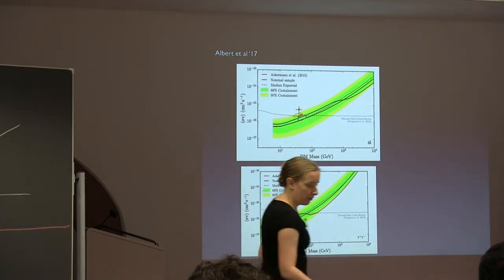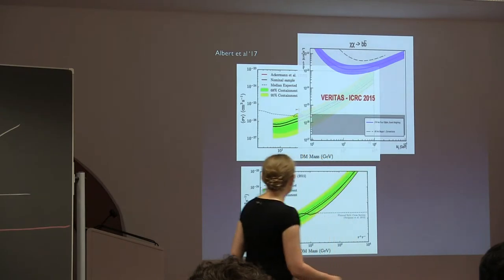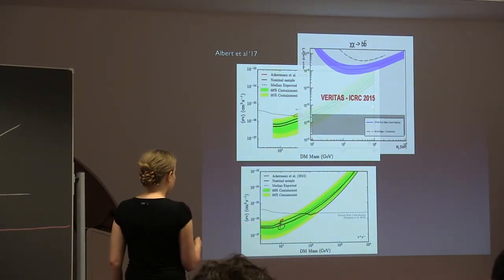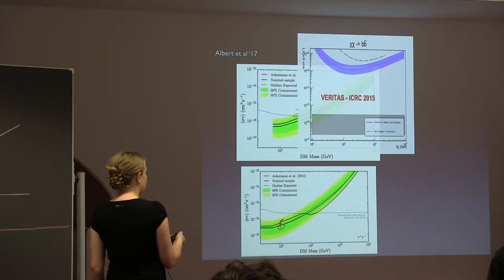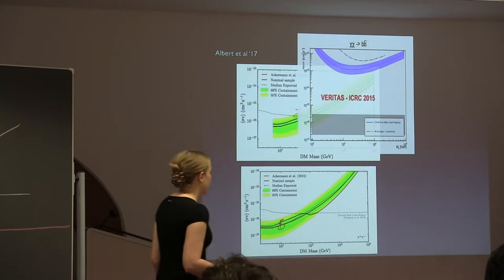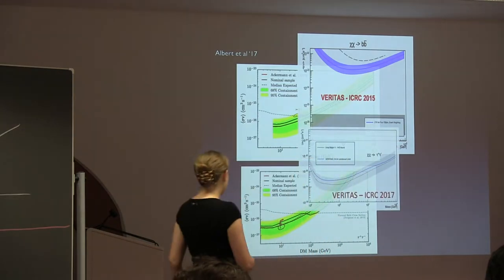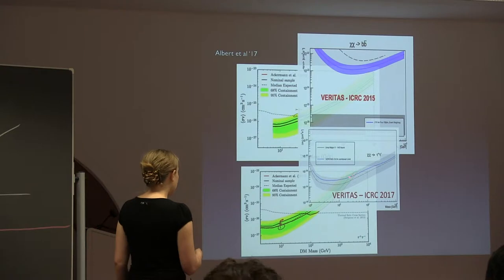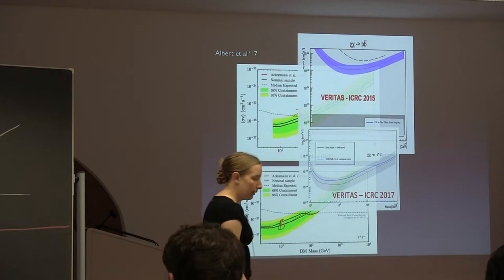Looking at higher-energy results from Veritas observing the dwarfs: at 10 TeV, it was pretty hard for Veritas to catch up with Fermi even at high mass scales as of 2015. A more recent 2017 Veritas result shows that around a few TeV, the Veritas limit starts to get stronger than the Fermi limit.